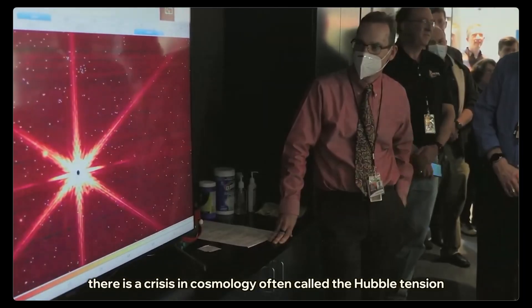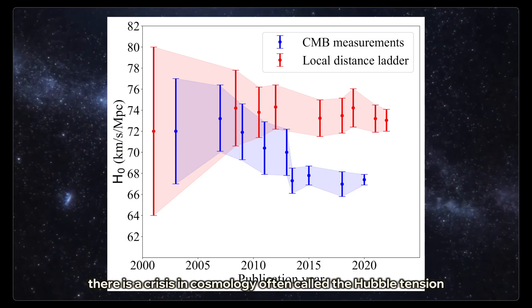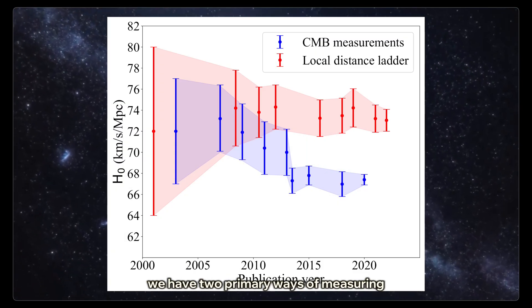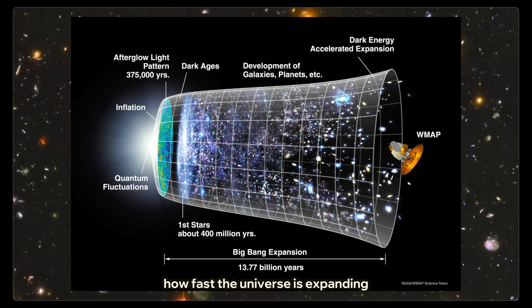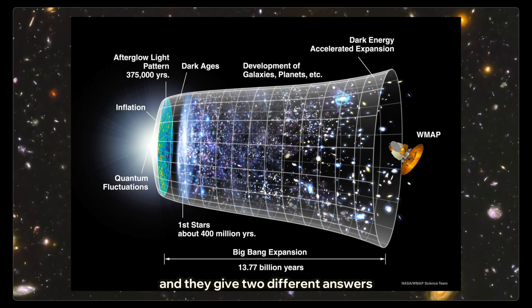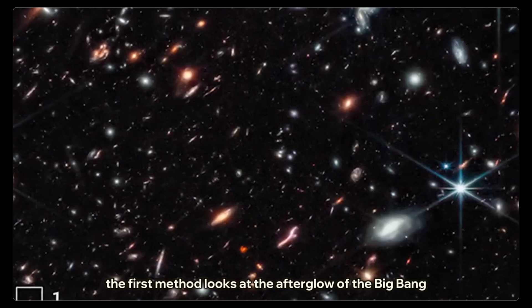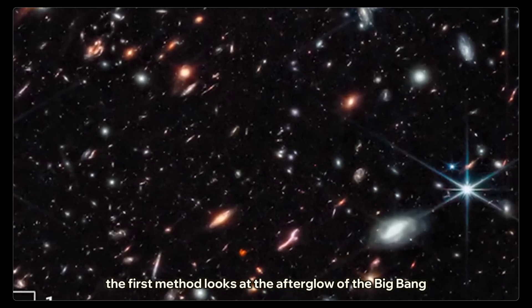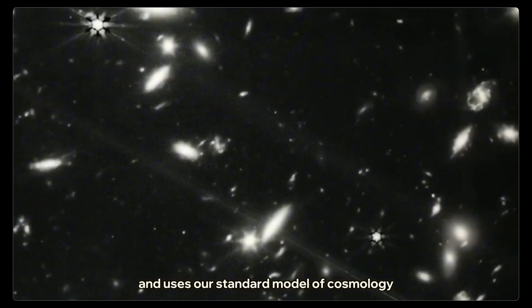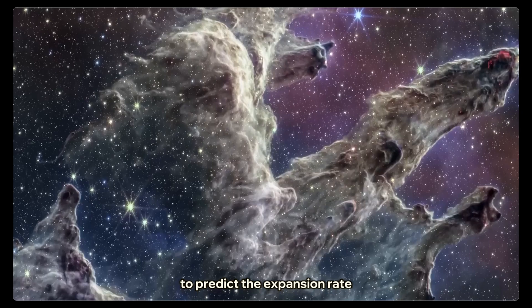There is a crisis in cosmology, often called the Hubble tension. We have two primary ways of measuring how fast the universe is expanding, and they give two different answers. The first method looks at the afterglow of the Big Bang and uses our standard model of cosmology to predict the expansion rate today.